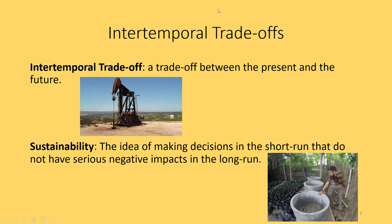Intertemporal trade-offs apply to both non-renewable and renewable resources, and that brings us to the idea of sustainability. Sustainability is the idea of making decisions in the short run that do not have serious negative impacts in the long run. Sometimes the way we farm or produce food could negatively affect our environment, depending on the kinds of pesticides or chemical fertilizers used and whether there's runoff affecting other parts of the environment. In some cases, we could be making decisions now that reduce our ability to produce in the future.